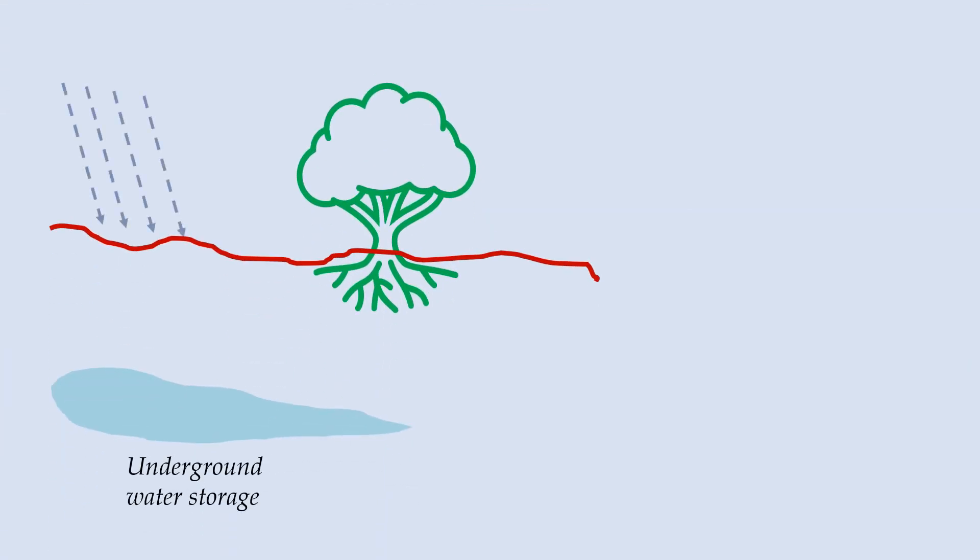Water from precipitation may seep into the ground. Instead of seeping deeper and reaching the underground water storage, some of it will be absorbed by a plant via its root system. Water does not stay inside the living plant for a long time.